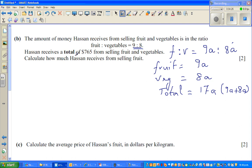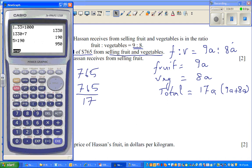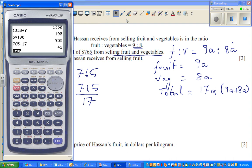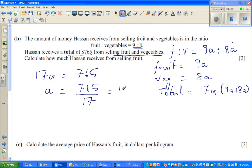Hassan receives a total of $765 from selling fruits and vegetables. If this is the total of ratio and this is the total of money, I can equate them. So 17A equals 765. I should divide both sides by 17. So A is 765 divided by 17, which is 45 dollars.